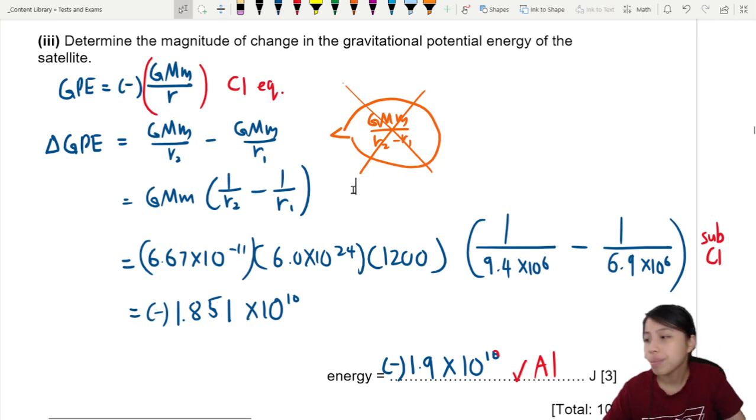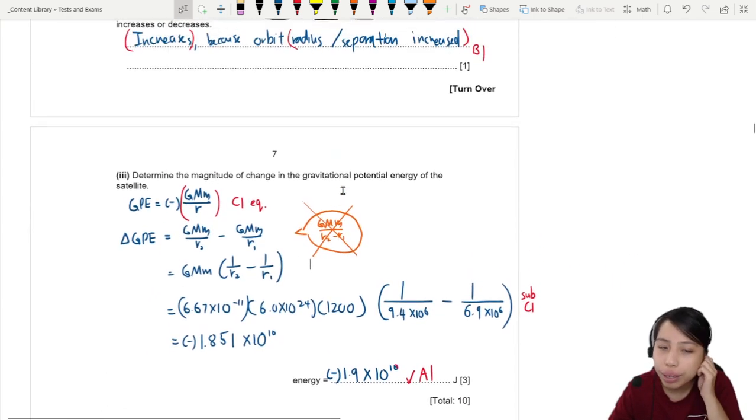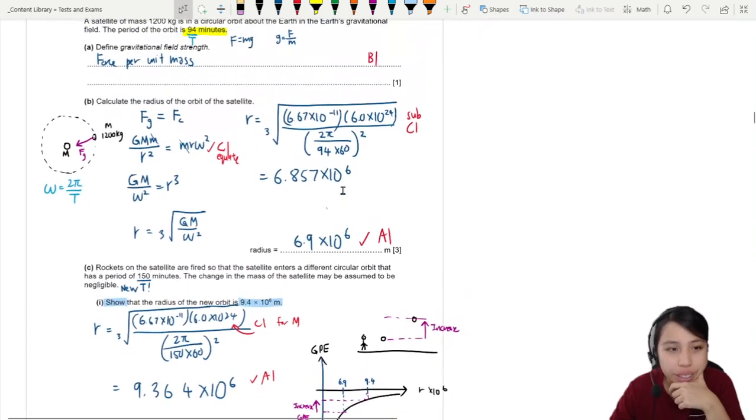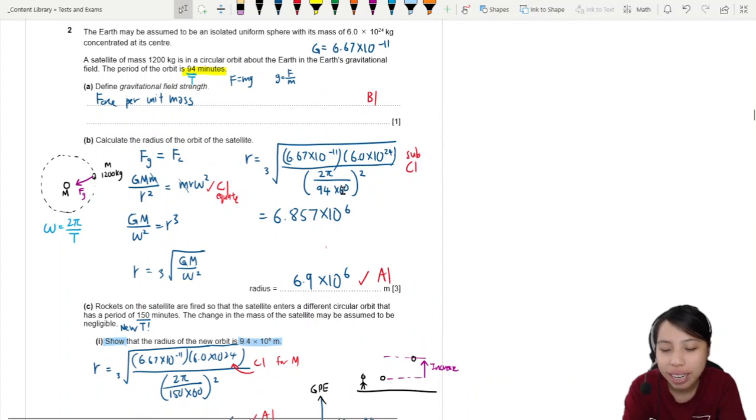I think that's the end of this question. Make sure to revise a little bit how to do GPE. This one is a calculation question. Hope that was helpful, helping you understand a little bit more. But that's all for this question. See you in the next one.